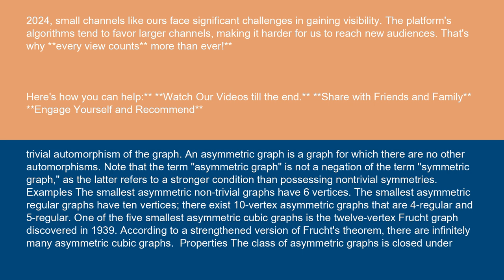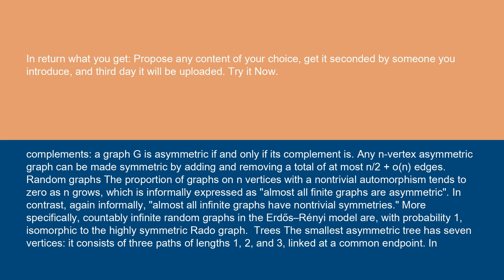Properties: the class of asymmetric graphs is closed under complements. A graph G is asymmetric if and only if its complement is. Any n-vertex asymmetric graph can be made symmetric by adding and removing a total of at most n/2 + 1 edges.